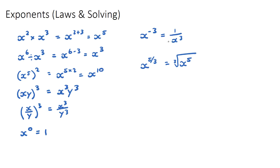So these are all of our indice laws. Same base multiplying: add the powers. Dividing: subtract the powers. Power to a power: multiply the powers. Multiplied or divided terms to a power: power both. Anything to the power of zero is one. A negative power means put it on the denominator as a positive power. And a fractional power can be written as a root.